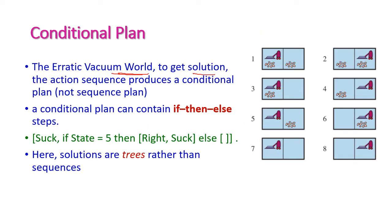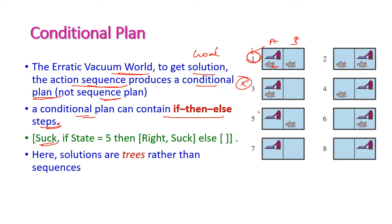In the erratic vacuum world, to reach the goal state, the action sequence produces a conditional plan, not a sequence plan. A conditional plan contains if-then-else steps. First we implement the suck action in step 1 — after implementing suck, room A will be clean. If we reach state 5 as the result of suck, then we implement the right action to move to state 6, and then suck to reach state 8. Otherwise, if the result is state 7, no action is needed — the system terminates. The solutions are trees rather than sequences.